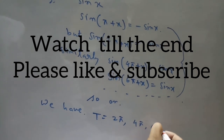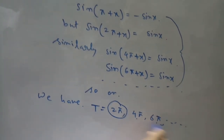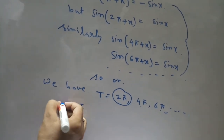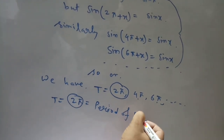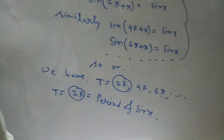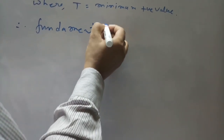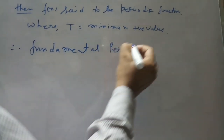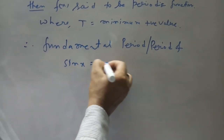4π, 6π. Therefore, the minimum positive value is 2π. 4π and 6π also satisfy the condition, but among these the minimum positive value is 2π. Therefore, this is the period of sin x — the minimum positive value 2π. This is the period of sin x, also called the fundamental period. Fundamental period of sin x equals 2π.